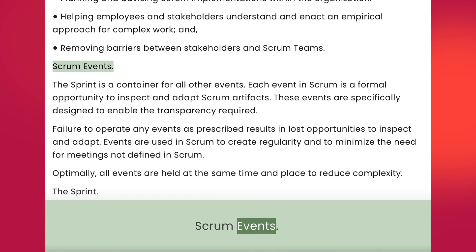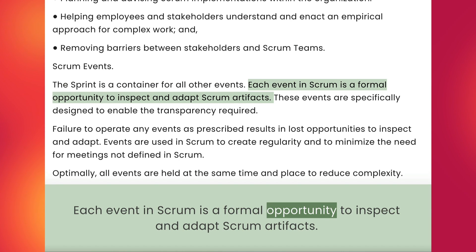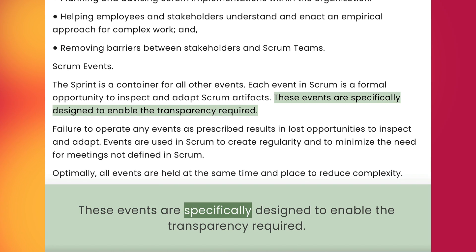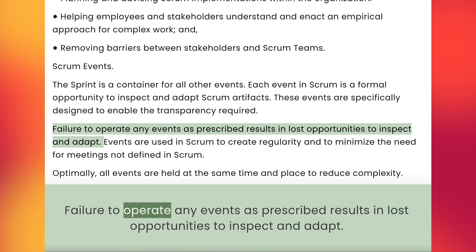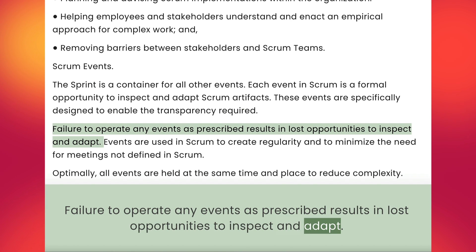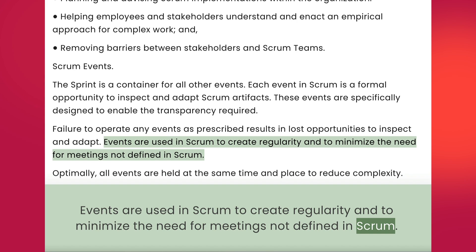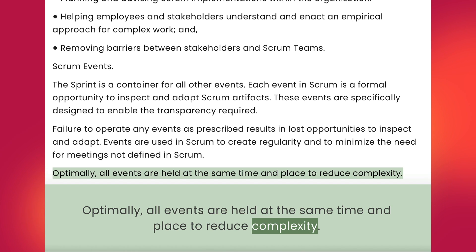Scrum Events. The sprint is a container for all other events. Each event in Scrum is a formal opportunity to inspect and adapt Scrum artifacts. These events are specifically designed to enable the transparency required. Failure to operate any events as prescribed results in lost opportunities to inspect and adapt. Events are used in Scrum to create regularity and to minimize the need for meetings not defined in Scrum. Optimally, all events are held at the same time and place to reduce complexity.